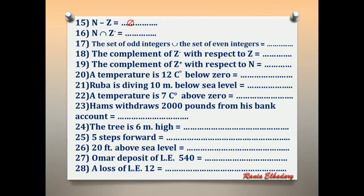Number 16: N intersection Z negative. What is the common element between natural and negative integers? Nothing. So the answer is phi.